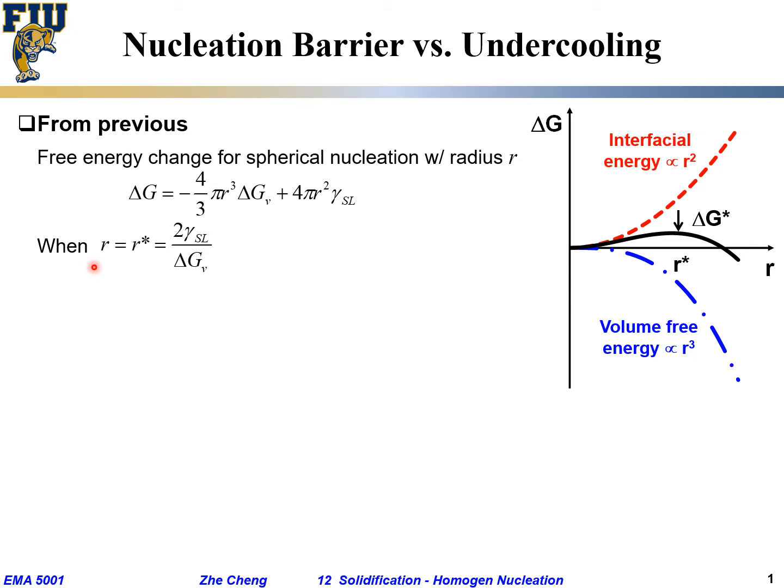When our radius reaches the critical point, what happens? At the critical point, the local first derivative is zero. At r* the local first derivative is zero. When r equals r*, from the previous page we said it's 2γ divided by ΔGv.